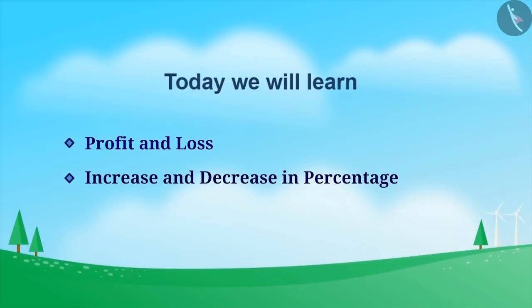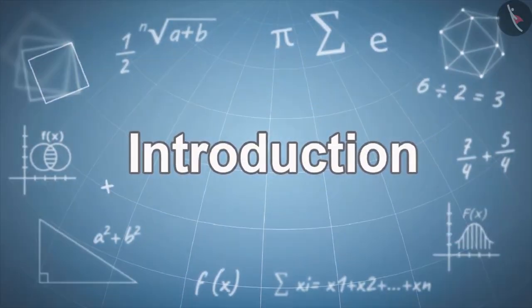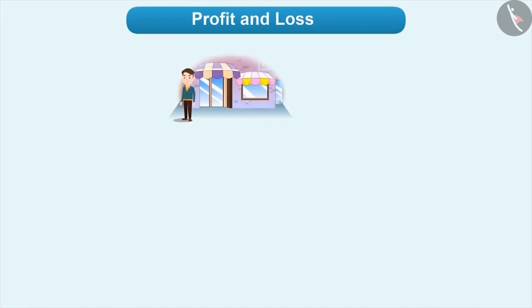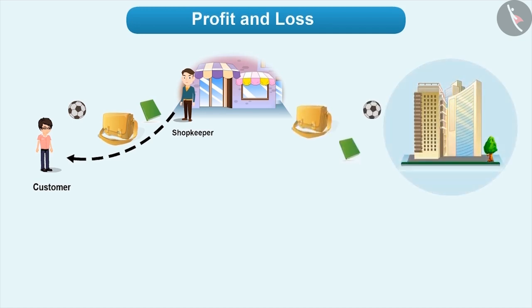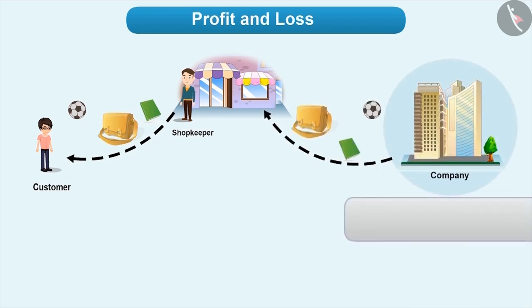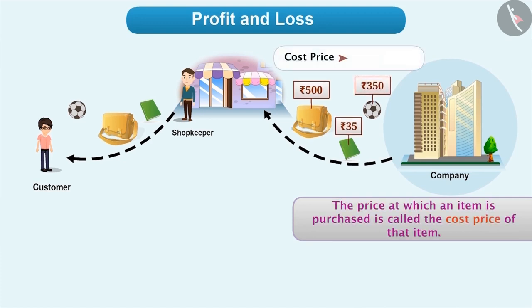Today, we will learn about Profit and Loss and Increase and Decrease in Percentage. Have you ever wondered how a shopkeeper earns his livelihood? The shopkeeper sells goods to earn for his daily needs, and he purchases them from big shopkeepers or from the companies that make them. The price at which an item is purchased is called the cost price of that item. We write cost price in simple form as CP.